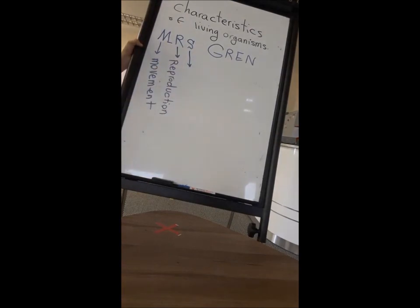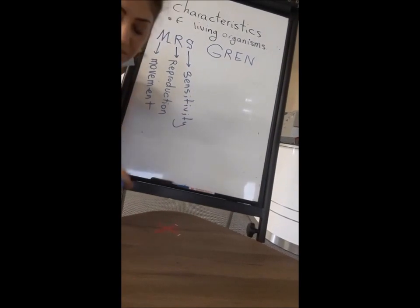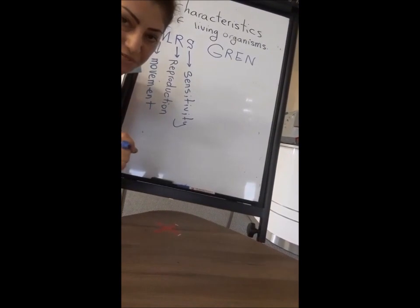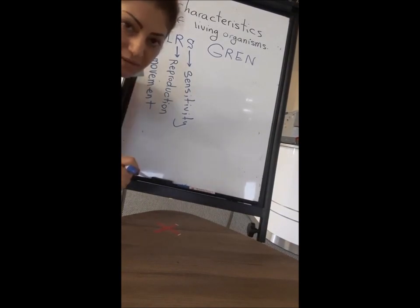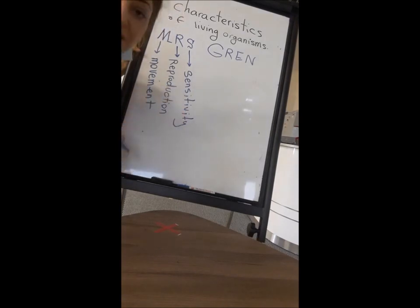S stands for Sensitivity. Sensitivity means the ability to detect changes in the environment — any changes that make you aware of dangers, your location, where you are standing, where you are heading, and also to make responses based on that, to stay away from predators and remain safe. If any organism has sensitivity, it means it's alive.